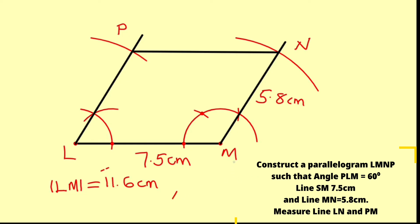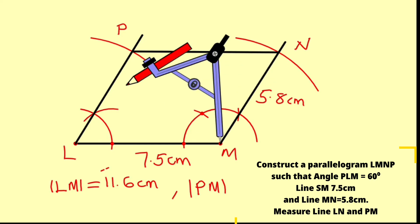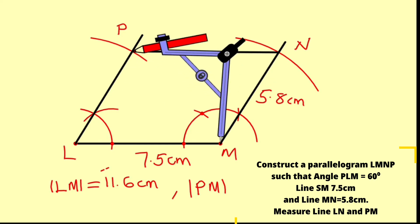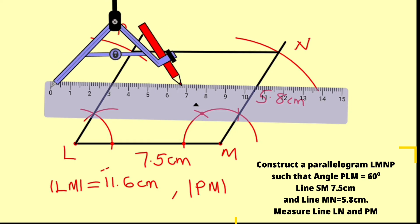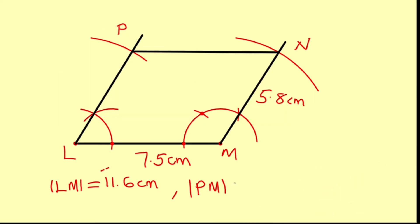Now let us also measure the distance from P to M. Using the compass to span that distance and then placing it on the ruler, the distance from P to M is roughly 6.7 centimeters. We have now answered this question, and that is all for today. Thank you for watching — do have a nice day.